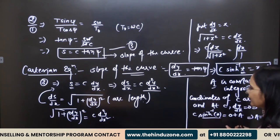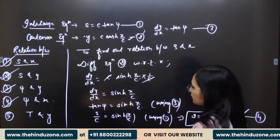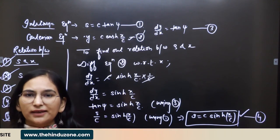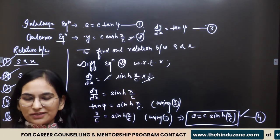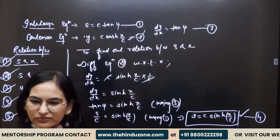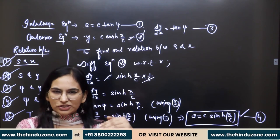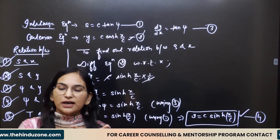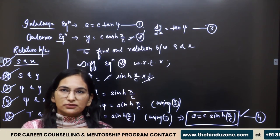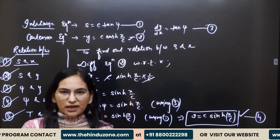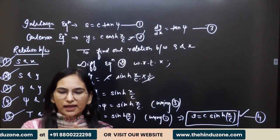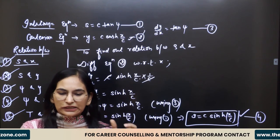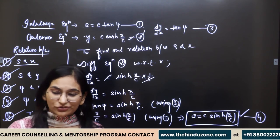This is supposed to be one of the difficult topics, but it is not difficult — we just lack familiarity with it. This was the basics of common catenary. All problems based upon this can now be solved. In the next lecture we will do questions. For UPSC, you should know how to derive the intrinsic equation, the cartesian equation, and all five relations: s and x, s and y, y and ψ, ψ and x, and T and y.